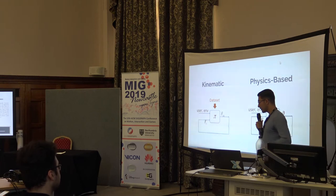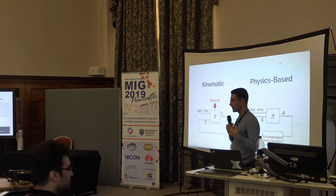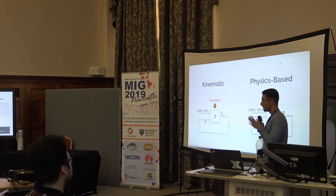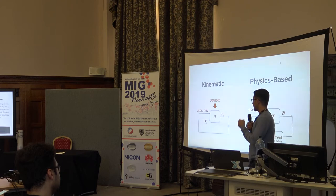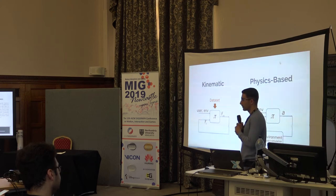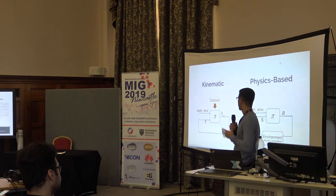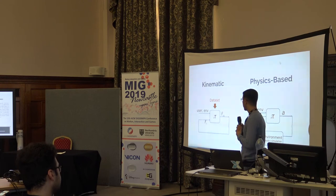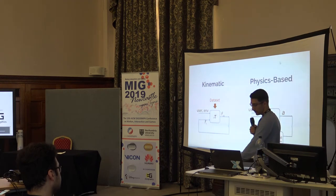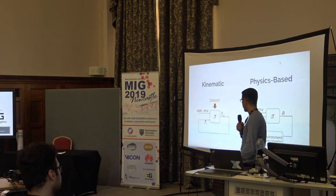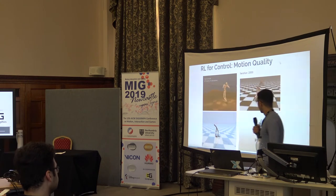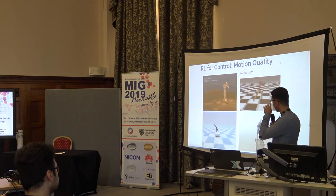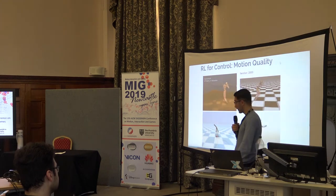Motion synthesis methods are usually divided into two groups of kinematic and physics-based methods. Kinematic methods are usually really biased towards the argument's walk, but if you don't have data or enforce a lot of constraints, you don't always get a motion that's similar. And you might get something like this, which is doing what it's supposed to do, but it's not really good for motion synthesis.